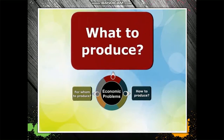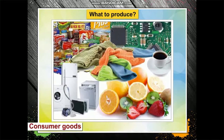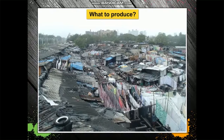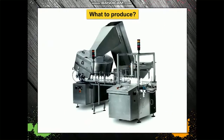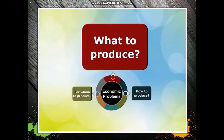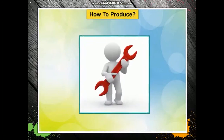The problem of what to produce raises a basic question: what kind of goods should be produced — consumer goods or capital goods? Consumer goods are produced in less developed economies with high density of population. Capital goods are produced in the developed economies, but technological revolution has already set in.